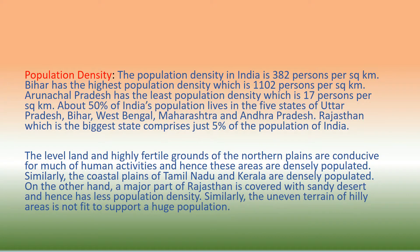Now let us study about population density. The population density in India is 382 persons per square kilometer. Bihar has the highest population density, which is 1,102 persons per square kilometer. Arunachal Pradesh has the least population density, which is 17 persons per square kilometer.